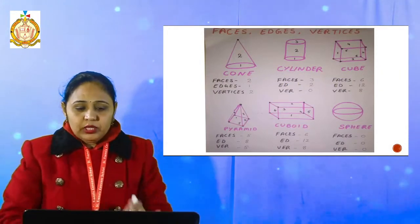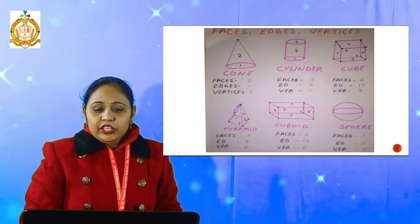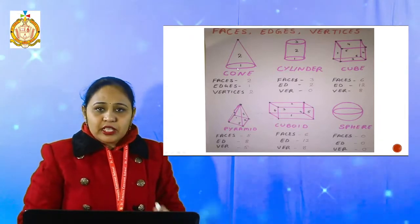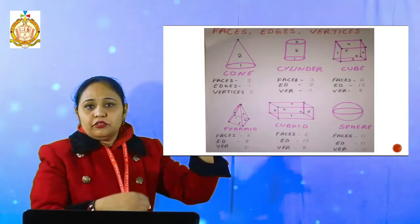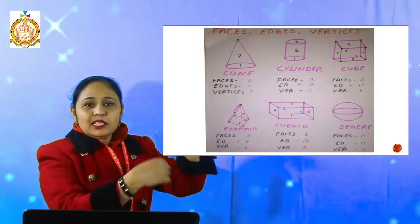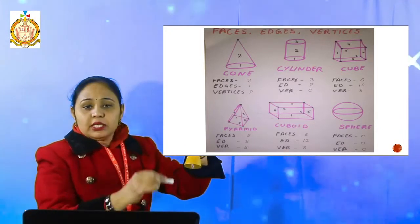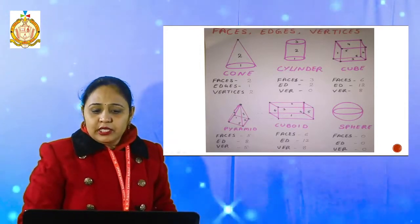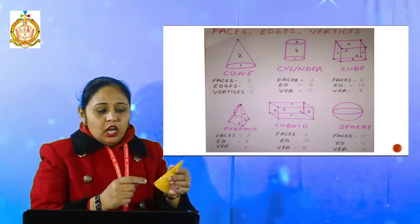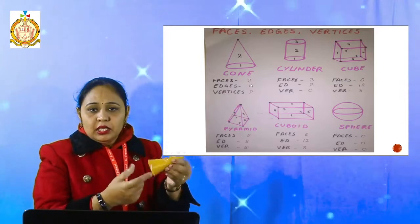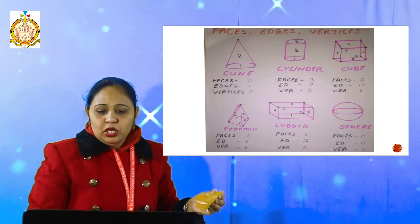Now in the case of a cone: faces — one face is a round figure at the base, that is the first face. And there is a round curved part with no end — that is the second face. How many faces does it have? Two faces.